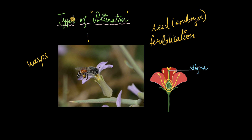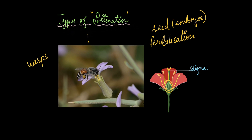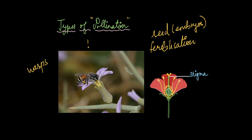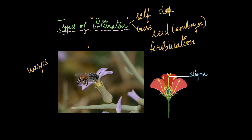In this video we're going to talk about the different types of pollination that exist in different species of flowers. Basically there are two types of pollination: self-pollination and cross-pollination. Self-pollination occurs within the same plant, and cross-pollination occurs between different plants of the same species.